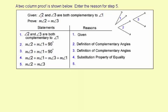Now the given statement is always first. Angle 2 and angle 3 are both complementary to angle 1. Notice that's the first statement right here. The proof statement, measure of angle 2 equals measure of angle 3, that always is the last statement. That's what you're concluding.